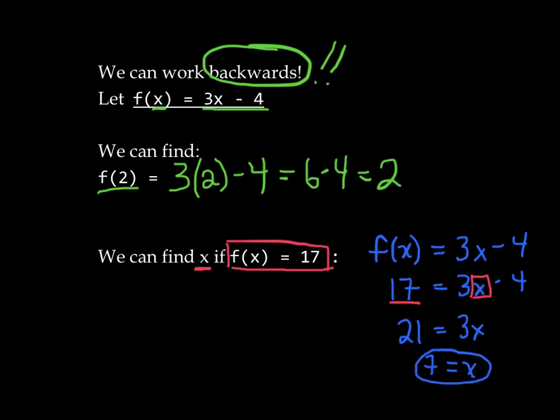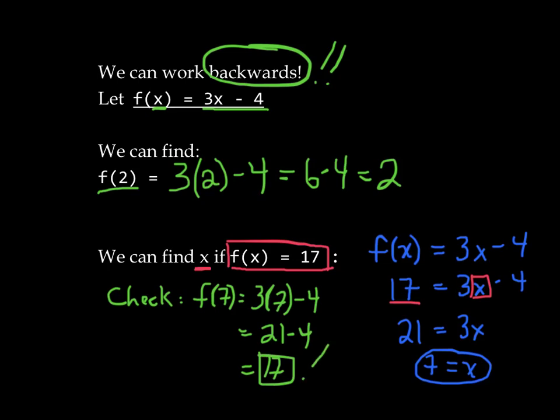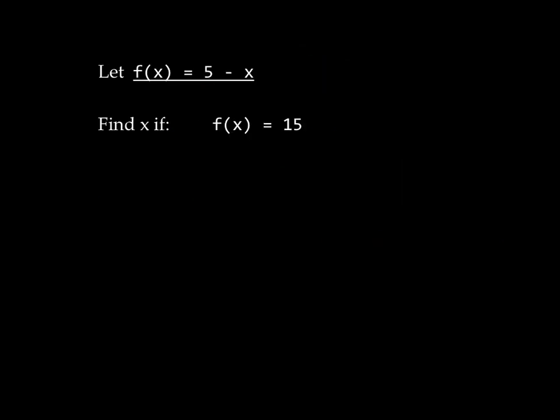Okay, let's check this. f of 7. Well, what is f of 7? f of 7 is 3 times 7 minus 4, which is 21 minus 4, which is 17. It worked. Awesome. Okay, try this problem out yourself, so go ahead and pause now.